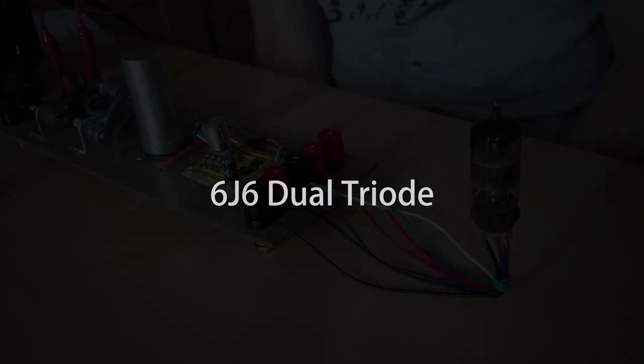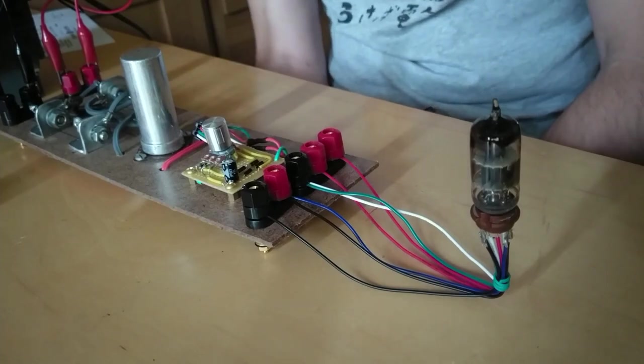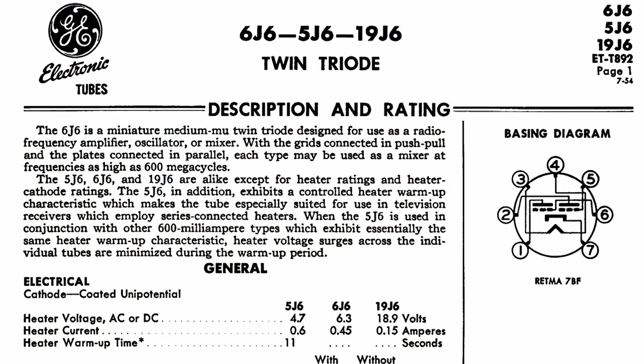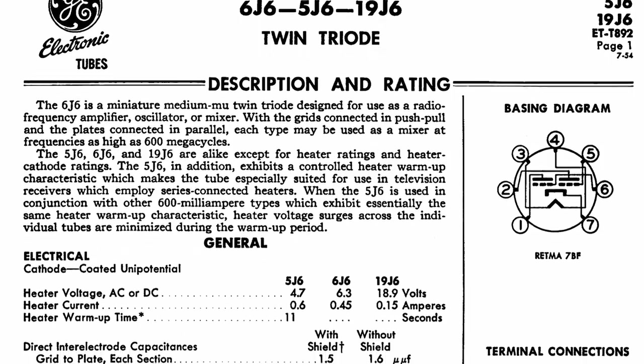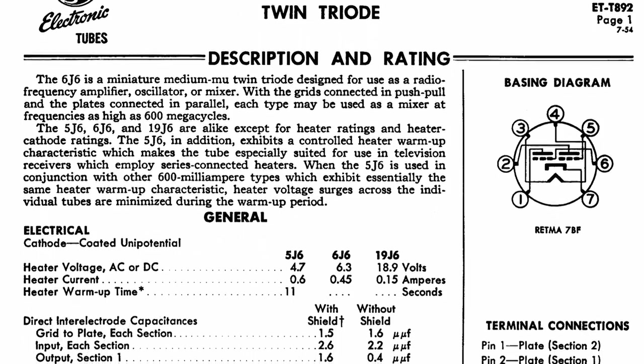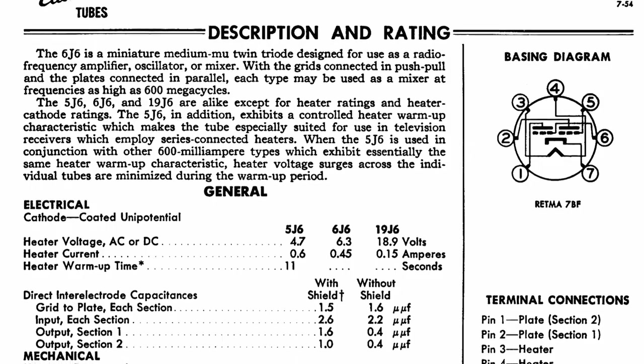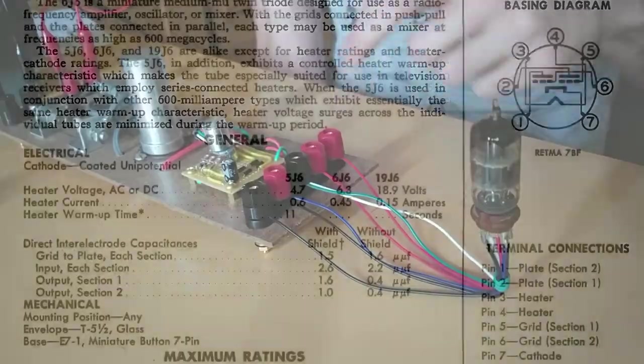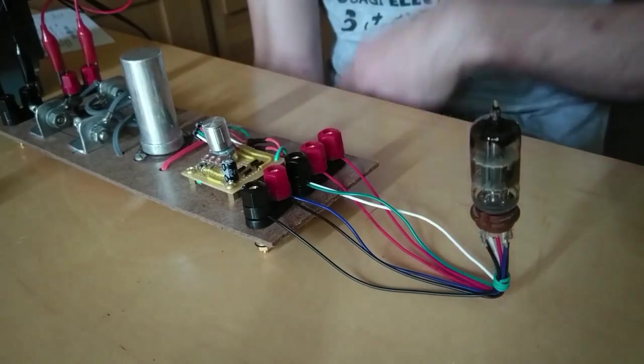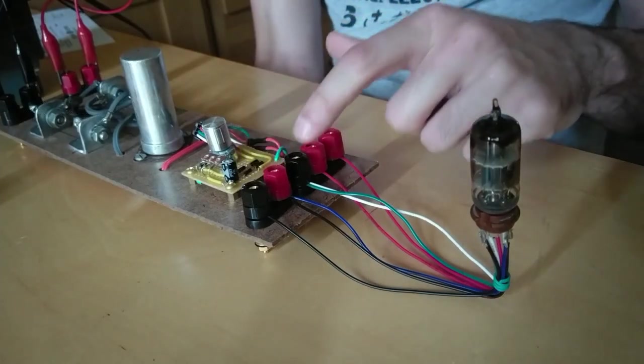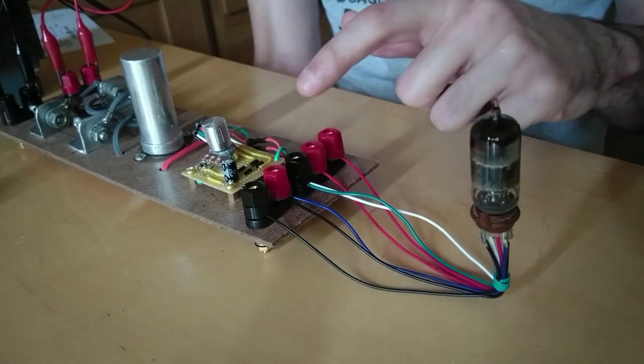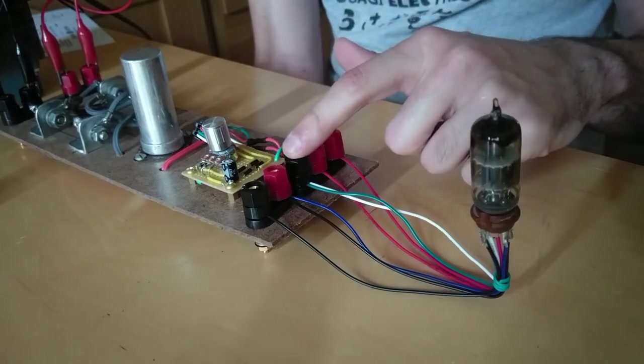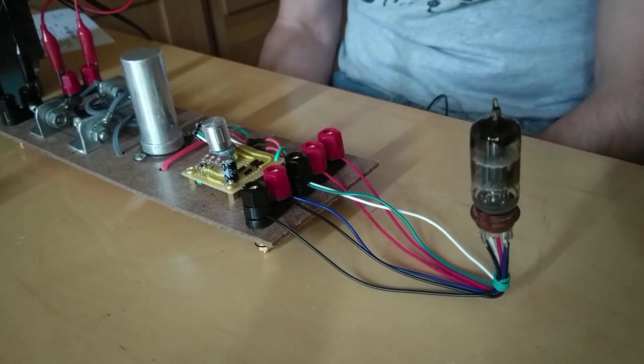All right. Next up, we've got the 6J6. This is a little seven pin dual triode. It's kind of rare to find a dual triode in a seven pin package. And they're able to do this because the two triodes share a cathode. So there's just one cathode between them and that's what we have hooked up to the ground here. Other than that, we've got both plates hooked up to high voltage and both grids hooked up to our control here in the middle. So all that's left to do is to turn it on and see what glows.